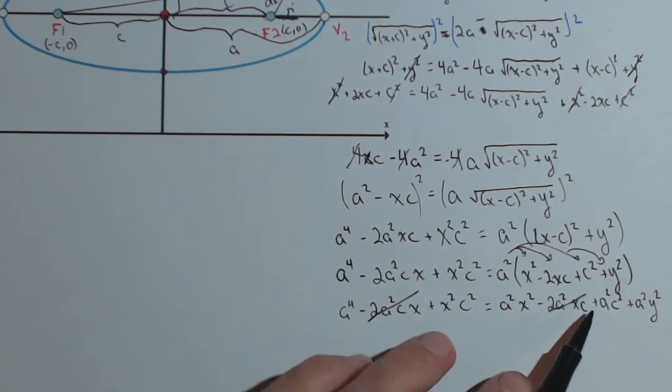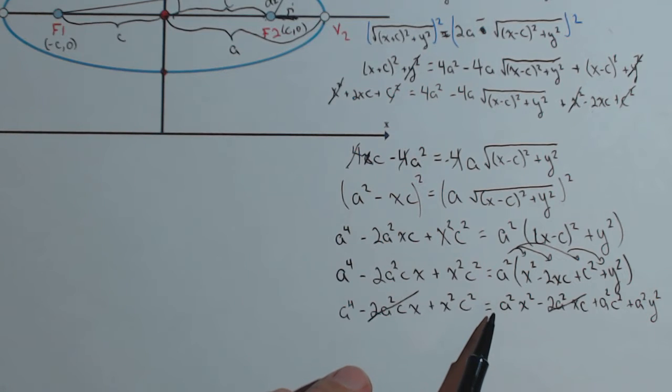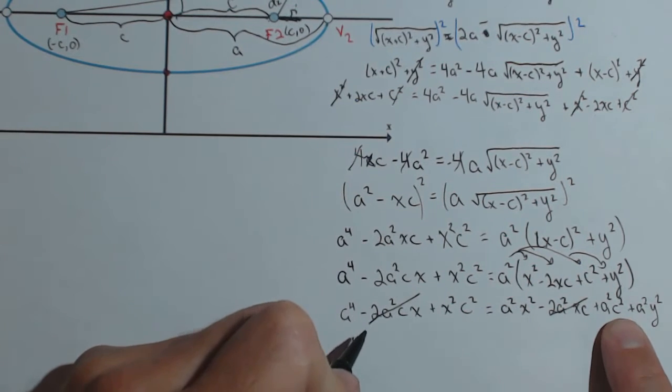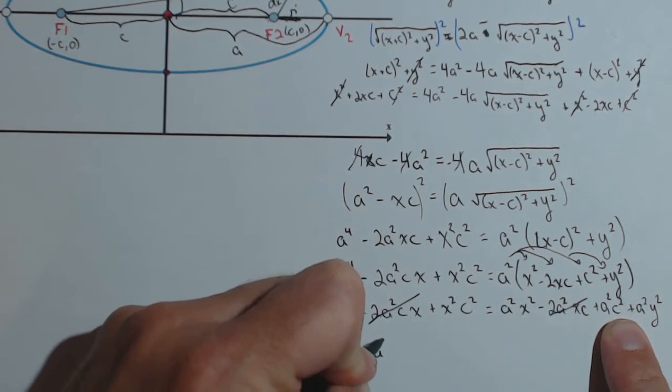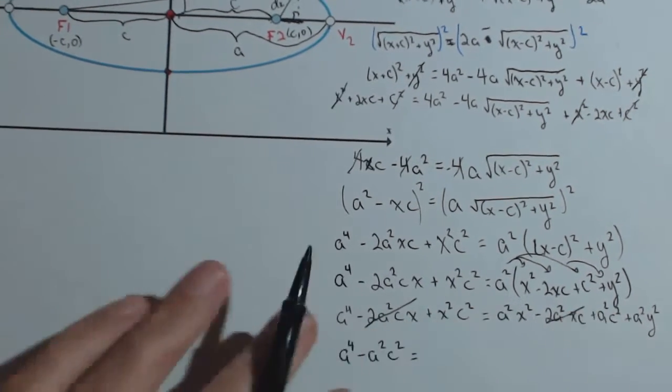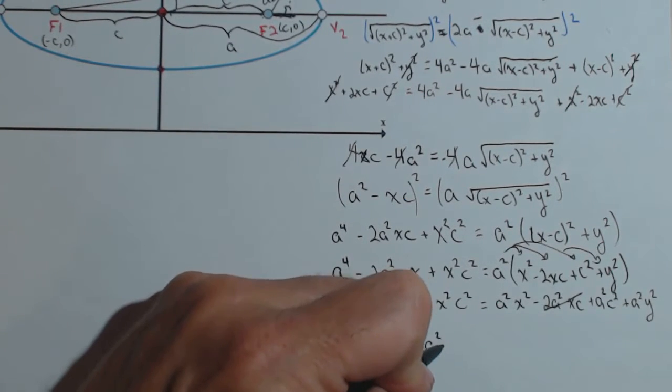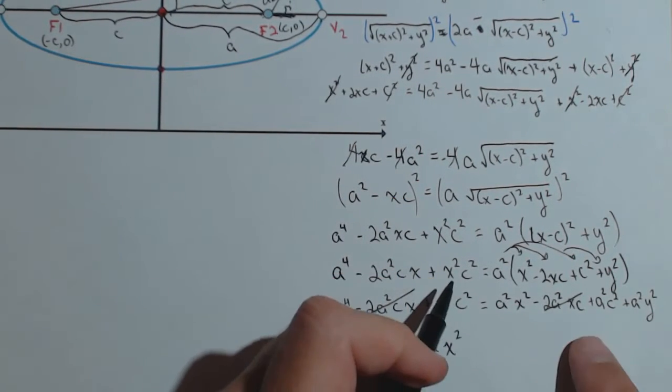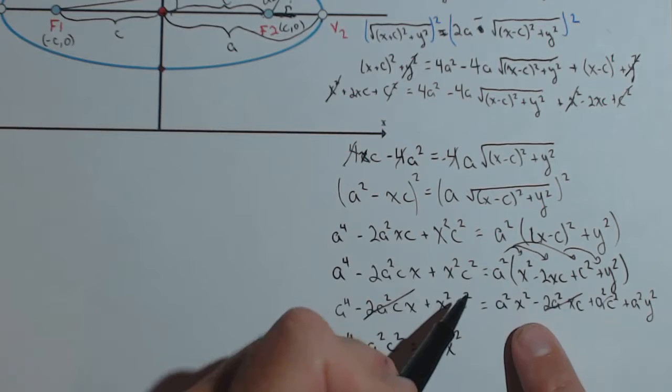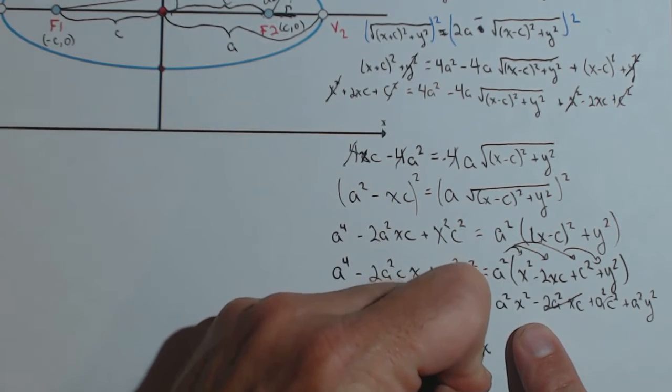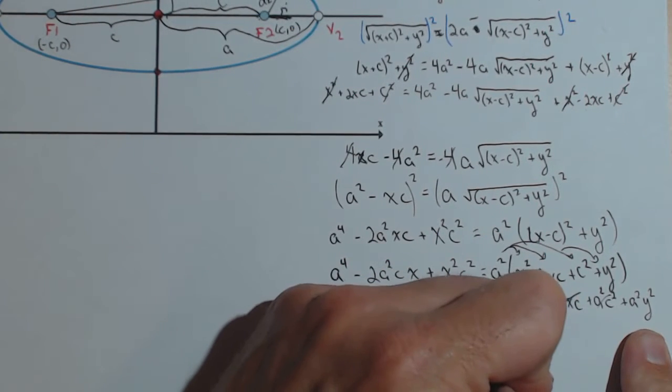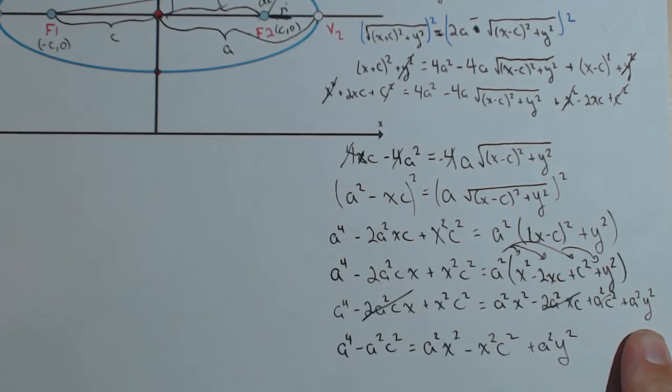The next thing I'm going to do is put everything with an x and y on one side and everything without an x and y on the other. So I've got the a to the fourth. And over here, I've got this term here. So minus a squared c squared. This term, I'm going to move over to this side. So I have a squared x squared. Then, notice, remember I moved this over to this side. Then, minus x squared c squared. That came from subtracting this off of both sides. Plus a squared y squared.